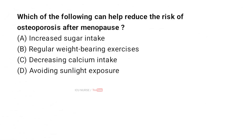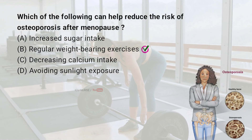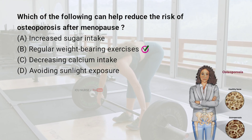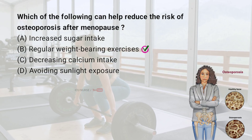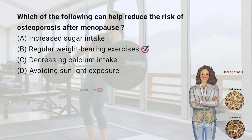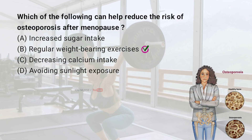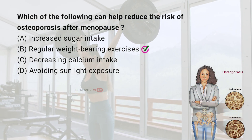Which of the following can help reduce the risk of osteoporosis after menopause? A. Increased sugar intake. B. Regular weight-bearing exercises. C. Decreasing calcium intake. D. Avoiding sunlight exposure. And the correct answer is B. Regular weight-bearing exercises. Osteoporosis becomes a concern after menopause due to declining estrogen levels. Weight-bearing exercises such as lifting weights help strengthen bones and reduce the risk of osteoporosis.